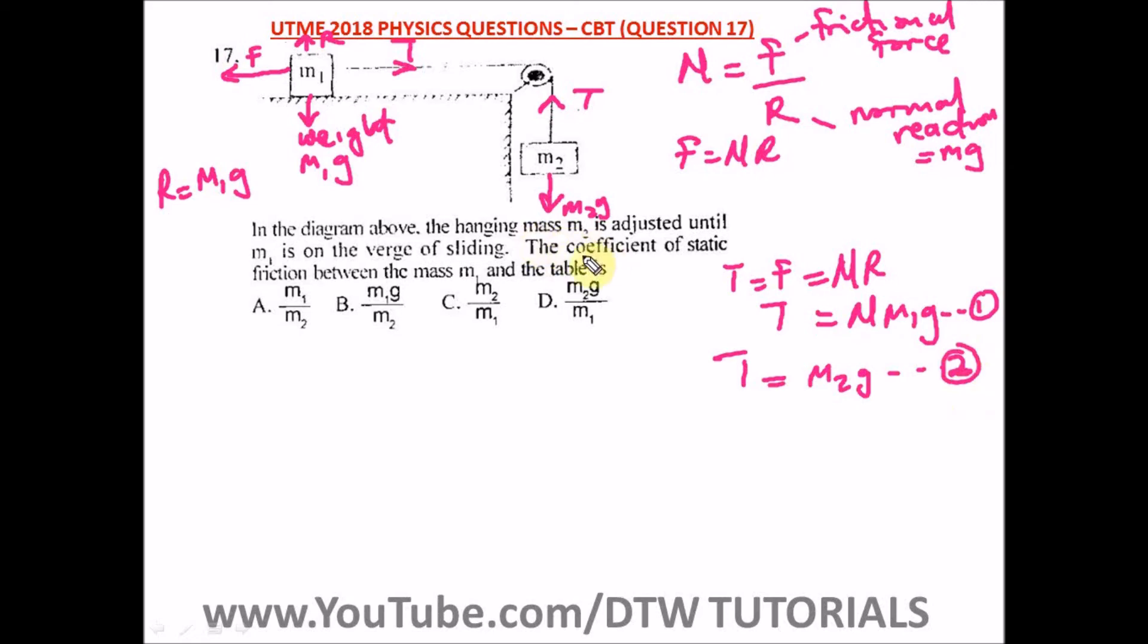The question says find the coefficient of static friction, that is mu. So we equate equation 1 and 2. We have mu M1g is equal to M2g. So from here, g can cancel out g.